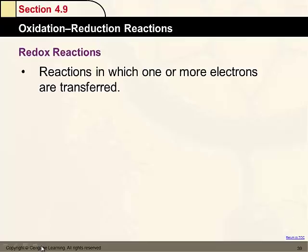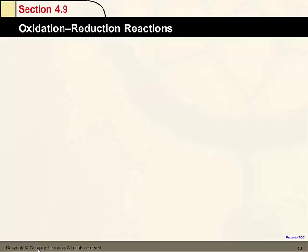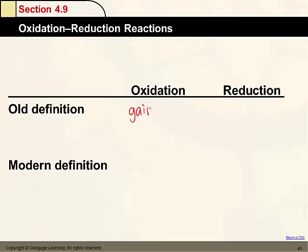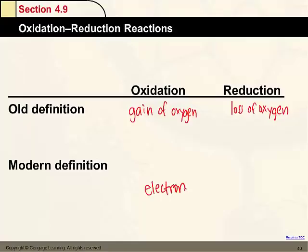A redox reaction is a reaction in which one or more electrons are transferred from one thing to another. There are a couple definitions of oxidation and reduction — an old and a more modern definition. In the old definition, oxidation was considered the gain of oxygen, and reduction was the loss of oxygen. We look at it differently now; the modern definition is based on loss or gain of electrons.